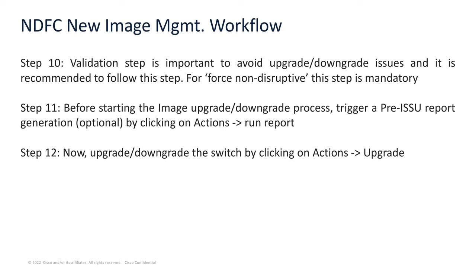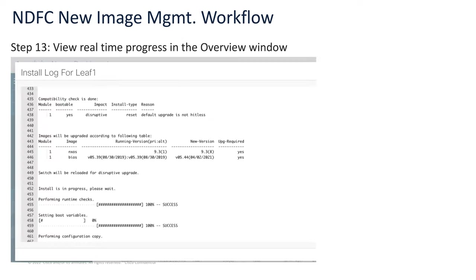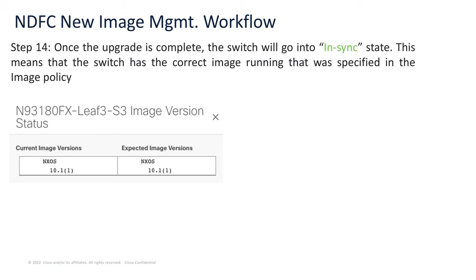Now we can go ahead and click on actions and upgrade to continue with the upgrade or downgrade operation. While this is going on, we have real-time progress that can be viewed, showing exactly what is happening and what step the switch is currently on. Once the upgrade is complete, the switch will go into an in-sync state, meaning it is now in sync with the policy you've defined and running the image that you wanted it to run.